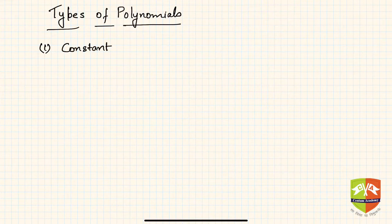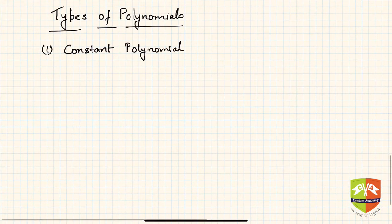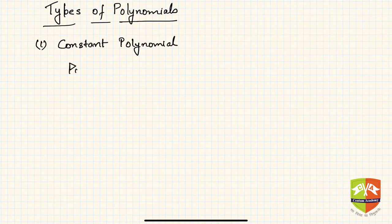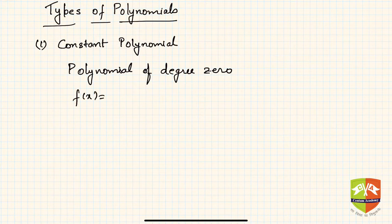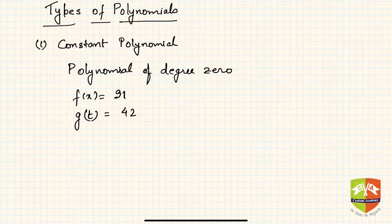As the name suggests, a constant polynomial is a polynomial of degree zero. For example, f(x) = 91, or g(t) = 42 — all are degree zero terms, and hence they are called constant polynomials.